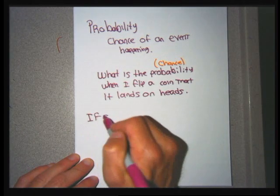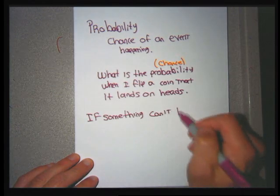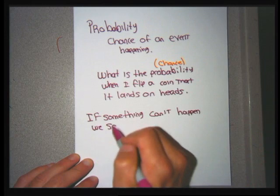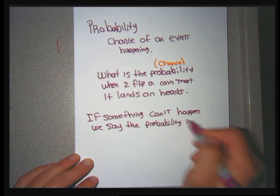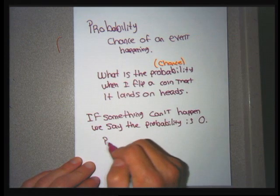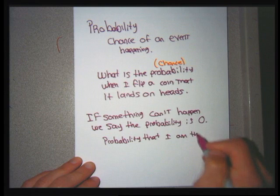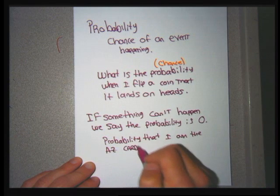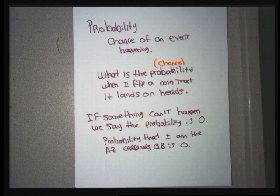If something can't happen, we say the probability is zero or zero percent. For instance, the probability of me playing quarterback for the Arizona Cardinals — it can't happen, so the probability is zero. This is an impossibility. There's no such thing as negative probabilities; the least probability you can have is zero, which is when something can't happen.